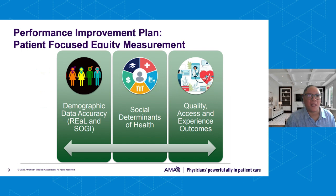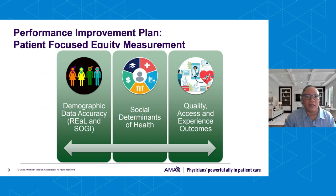Our performance improvement plan focuses on patient-centered equity measurement. We're looking at all factors such as demographic data accuracy, collecting REAL — race, ethnicity, and language data — as well as SOGI — sexual orientation and gender identity data. We're also taking a look at social determinants of health data, as well as quality, access, and experience outcomes.